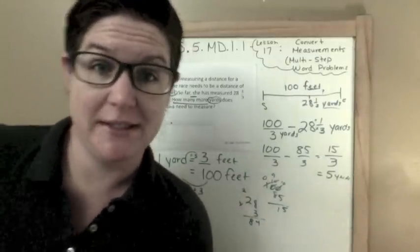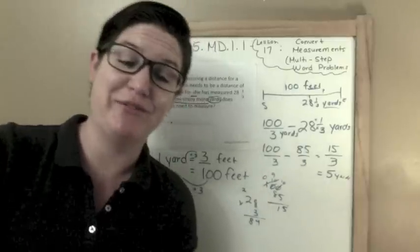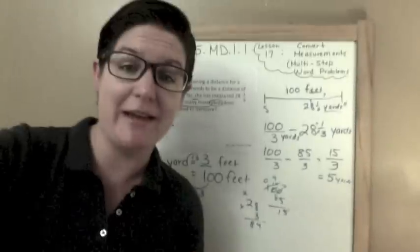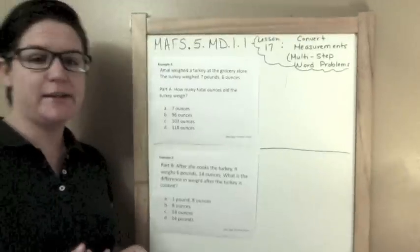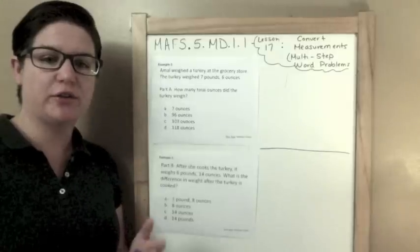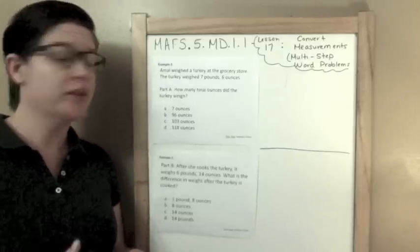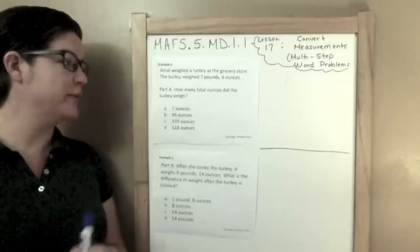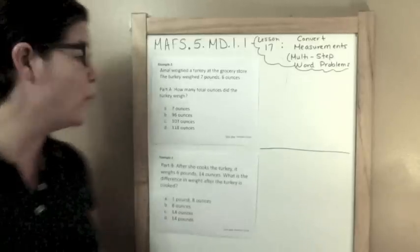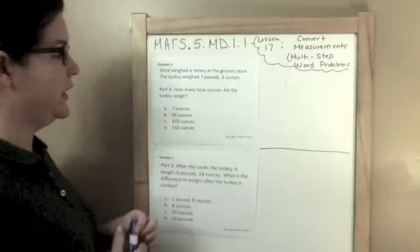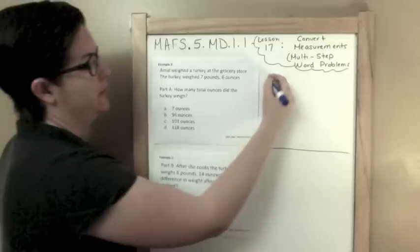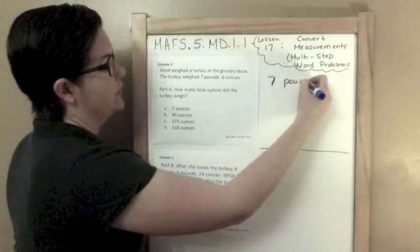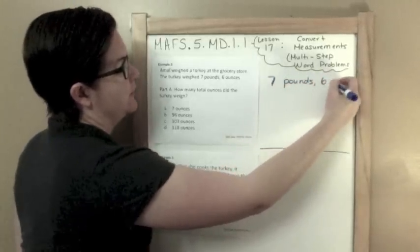These are going to take a little bit because they're multi-step problems — they're converting units and it's so much fun. Example two: a mom weighed a turkey at the grocery store. The turkey weighed seven pounds, six ounces. How many total ounces did the turkey weigh? The turkey weighed seven pounds, six ounces.